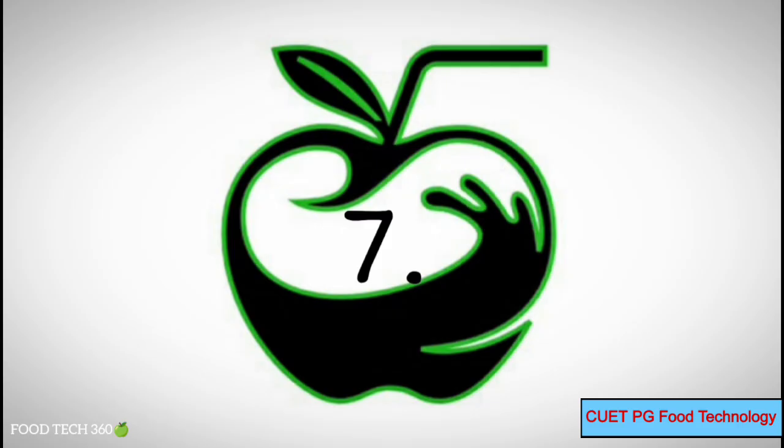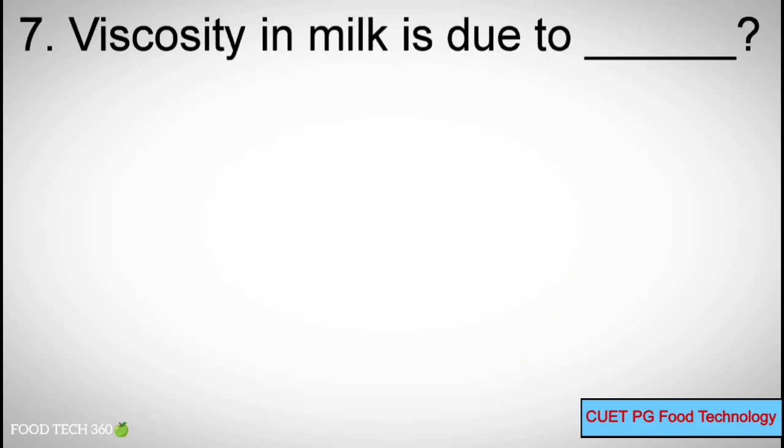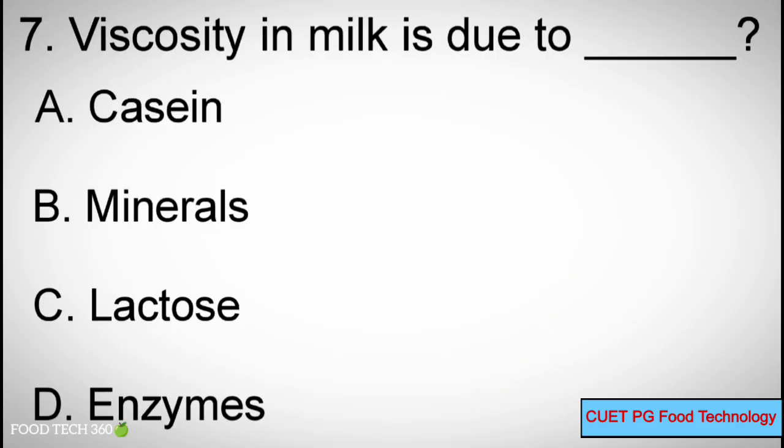Q7: Viscosity in milk is due to? A. Casein, B. Minerals, C. Lactose, D. Enzymes.